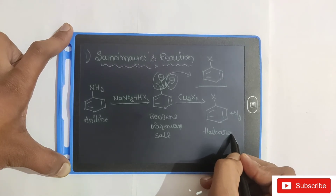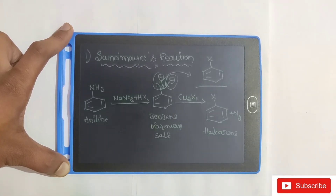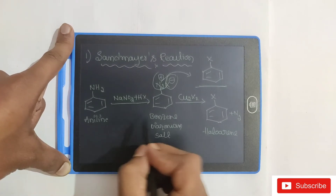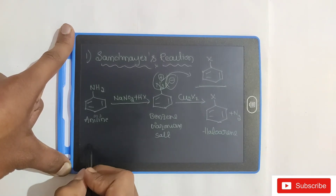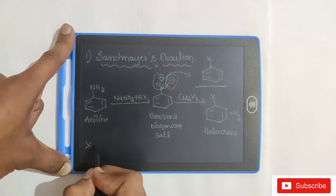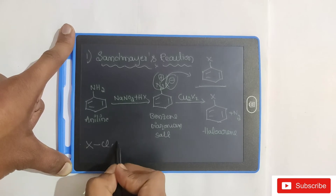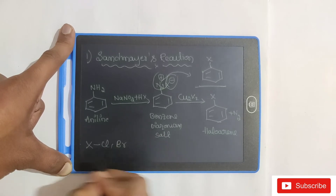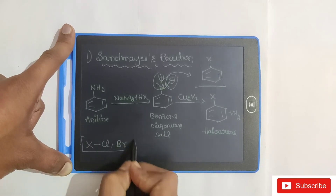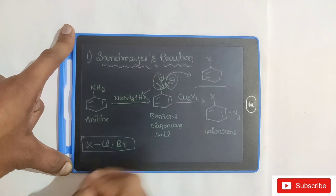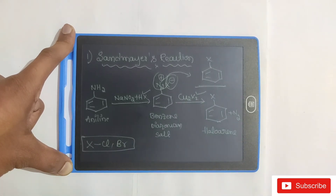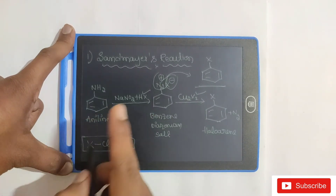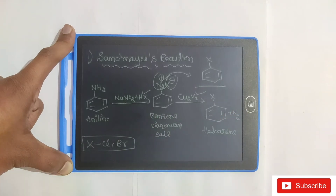The product is a haloarane (X), and nitrogen gas is liberated in this reaction. This is Sandmeyer's reaction. It works with chloride and bromine — that is, chlorine and bromine atoms are introduced.